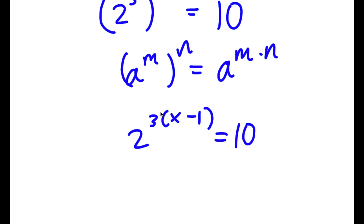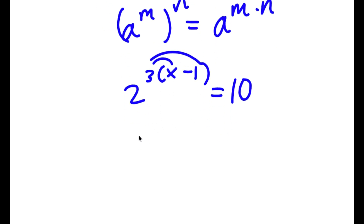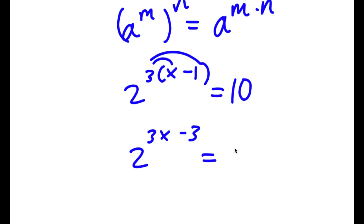And I can simply distribute the 3, so I have 3 times x plus 3 times negative 1. So 3 times x is 3x and 3 times negative 1 is negative 3, giving me 2 to the power of 3x minus 3 is equal to 10.